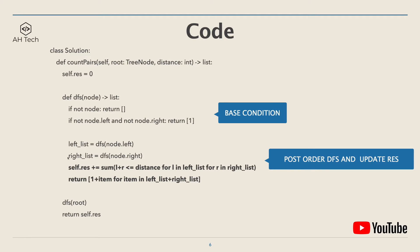Then we perform DFS into the left and right subtrees and get the left list and right list. The key part is updating self.res using Python list comprehension: we iterate over every element in the left list and right list. The list stores the distance of each leaf node from the current node, so the distance between a pair of leaf nodes is l plus r. If l plus r is less than or equal to the input distance, it contributes one to the count; otherwise zero. We sum these up and add to self.res.